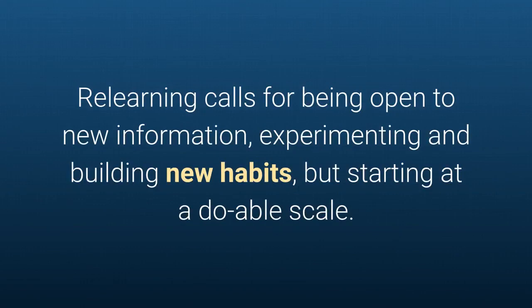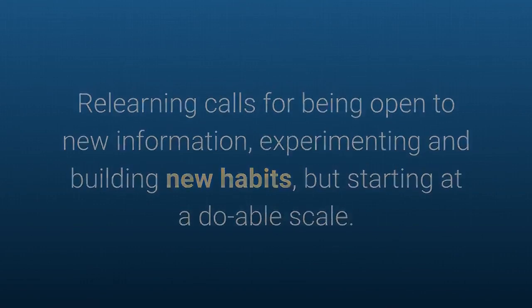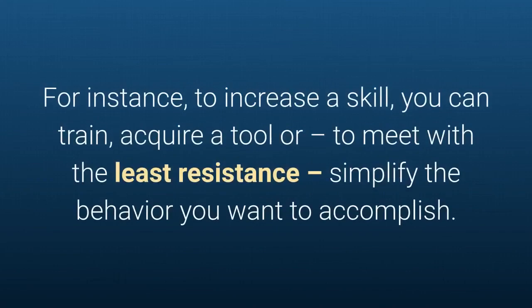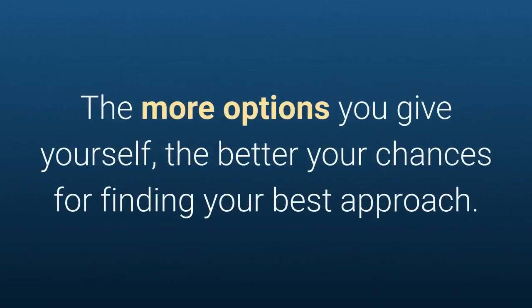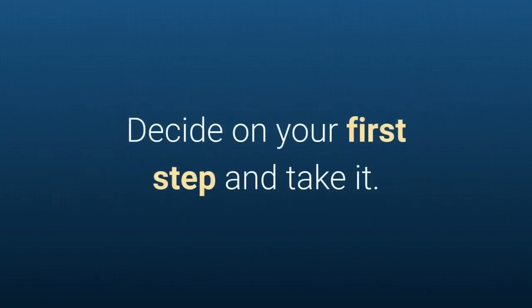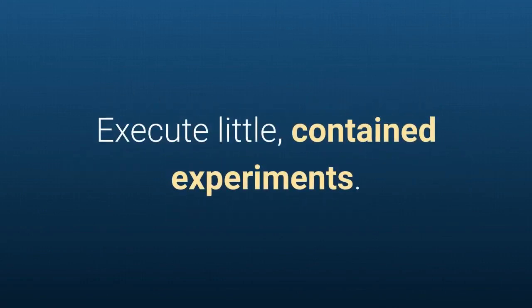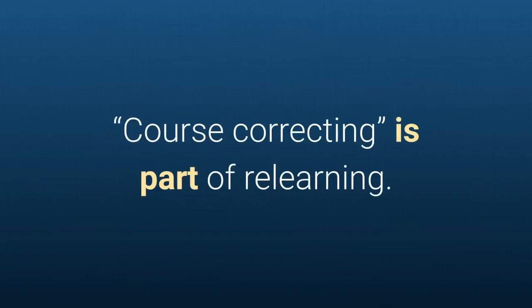Relearning calls for being open to new information, experimenting, and building new habits at a doable scale. List small steps you can take toward your goal — for instance, to increase a skill you can train, acquire a tool, or simplify the behavior you want to accomplish. The more options you give yourself, the better your chances of finding your best approach. Decide on your first step, take it, and celebrate results to reward your brain for trying a new behavior. Execute little contained experiments — course correcting is part of relearning.